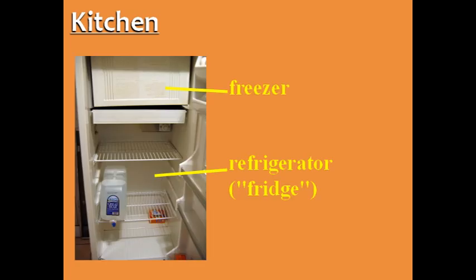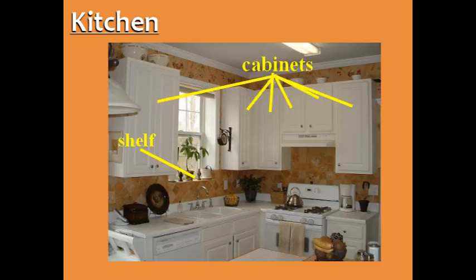When talking about a specific meal, we usually use the verb make: make breakfast, make lunch, and make dinner. You can keep food cold in the refrigerator, or fridge for short. And food that needs to be very cold, like ice cream, is kept in the freezer. Other foods are kept inside cabinets, or on a shelf.